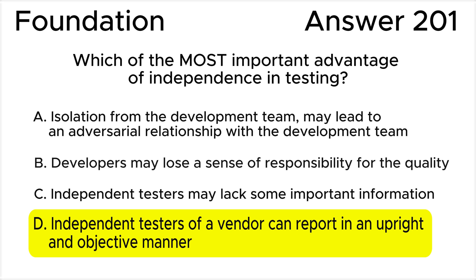Their objectivity helps ensure that defects and issues are identified and reported accurately, without bias or conflict of interests. This impartial reporting is crucial for maintaining the integrity of the testing process and ultimately improving the overall quality of the software product.